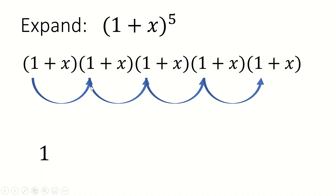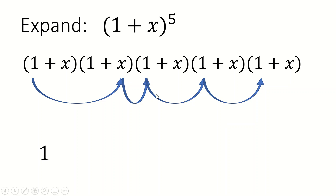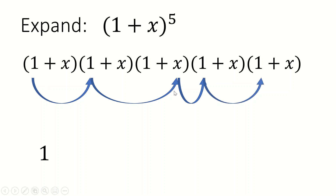So now what happens if instead of bouncing along all the 1s, I chose an x? It doesn't matter which one. What if I went to this x, started at 1 again, went to this x, and then just went to all the 1s again? Now 1 times x times 1 times 1 times 1 is just x. But is there another way to get an x? Yes — instead of choosing this x I could choose another x. So I'd have a plus x plus another x. But how many ways can I do that? There are five x's, so there must be five ways of getting an x, meaning the next term is plus 5x.